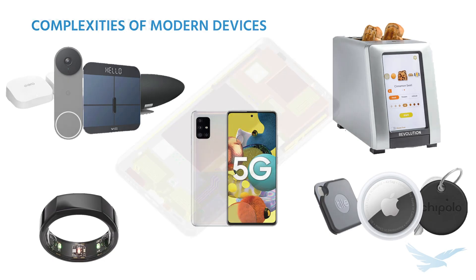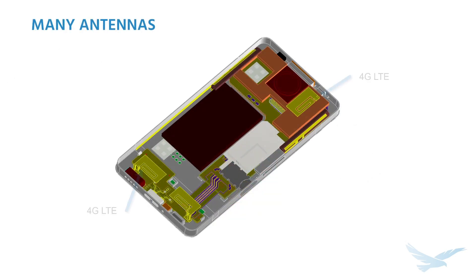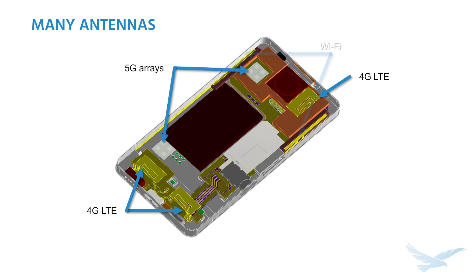Consider a smartphone, where there are various antennas that cover cellular, including 5G, Wi-Fi, GPS, Bluetooth, and NFC that all need to work together efficiently.